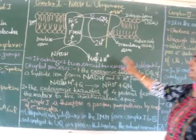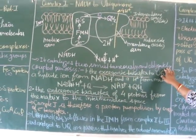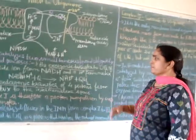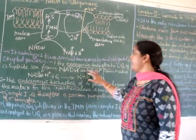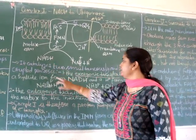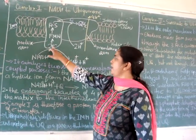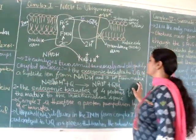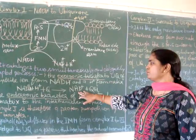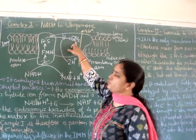Complex I catalyzes two simultaneously and obligately coupled reactions. The first reaction is the exergonic transfer to ubiquinone of a hydride ion from NADH and a proton from the matrix — that is, oxidation of NADH to NAD⁺ and reduction of ubiquinone to ubiquinol. Electrons are transferred through prosthetic groups including FMN and iron-sulfur proteins before finally reducing ubiquinol.